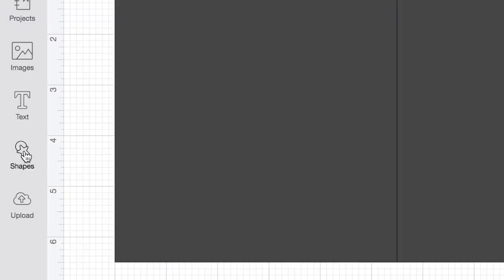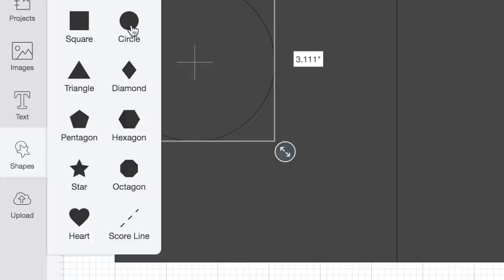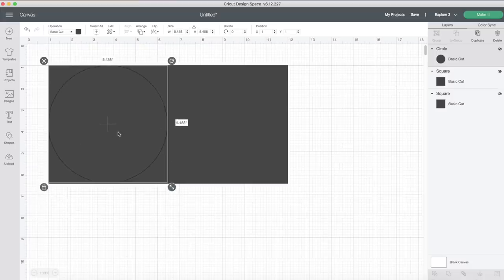To create the actual design, I'm going back to our shapes menu, clicking on a circle, and putting that circle between the two tiles. This is how we're going to create that half moon shape.